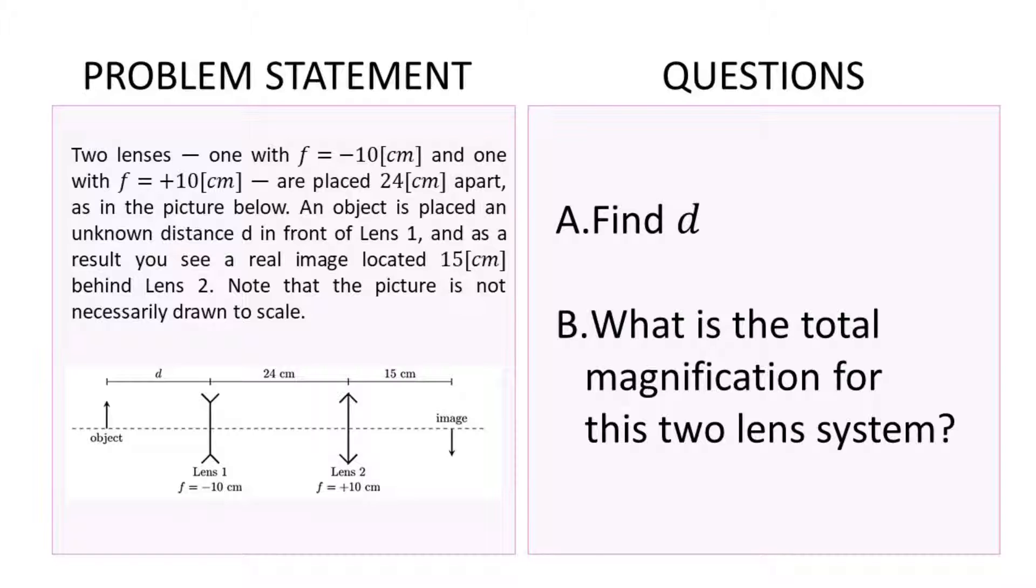Here's the problem. Feel free to pause the video to copy the problem so that it's easy for you to follow along. We have two lenses, one with a focal length of negative 10 cm and one with a focal length of plus 10 cm. And they are placed 24 cm apart, as in the picture below. An object is placed in an unknown distance d in front of lens 1 and as a result you see a real image located 15 cm behind lens 2. Note that the picture is not necessarily drawn to scale. What we want to find is the distance d of the object from lens 1 and what is the total magnification for this two lens system.